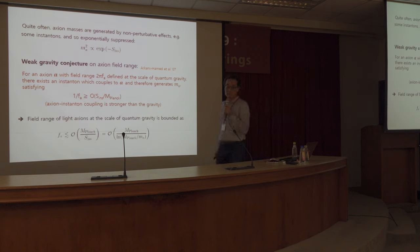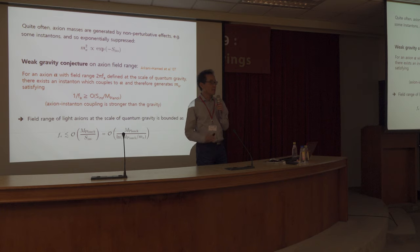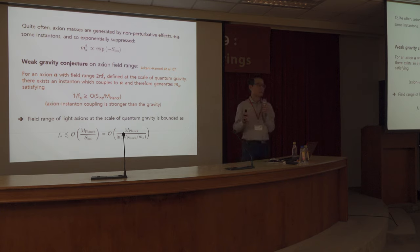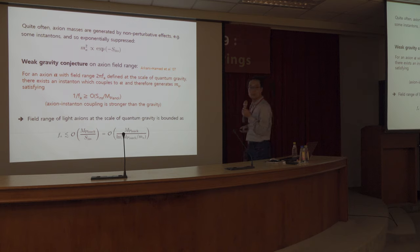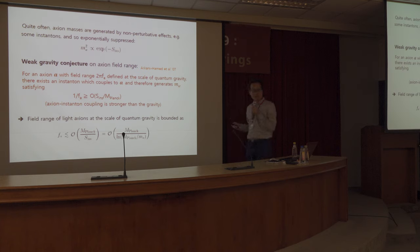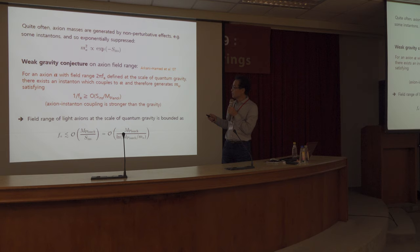The reason we are interested in axions is that they can be natural because of this approximate U(1)_PQ symmetry. In particular, quite often axion masses are generated by non-perturbative effects, for instance from instantons which are exponentially suppressed — of course, in the semi-classical limit where the instanton action becomes large.